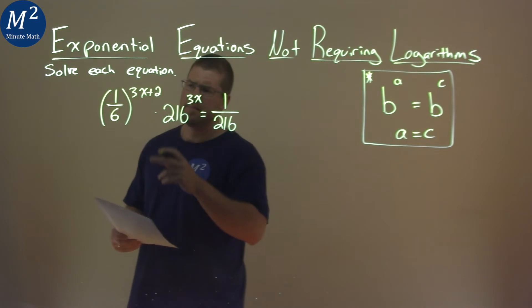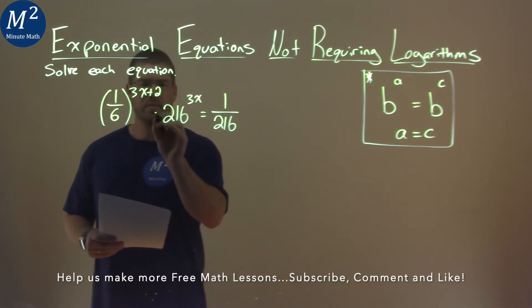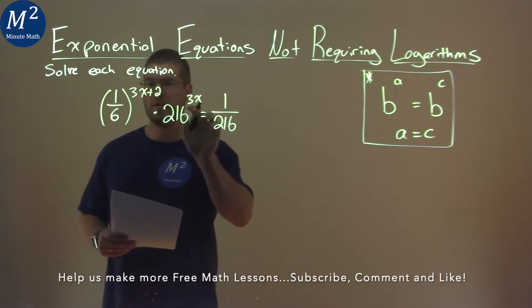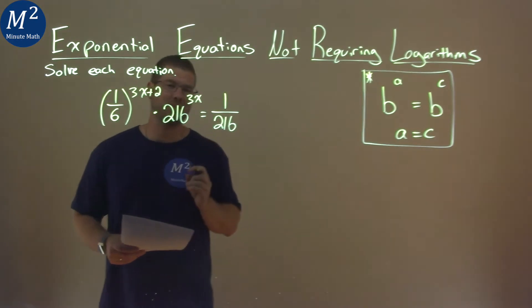We're given this problem right here. 1 over 6 to the 3x plus 2 power times 216 to the 3x power, and that's equal to 1 over 216, and we need to solve this equation.